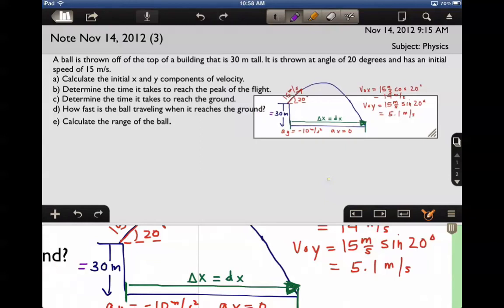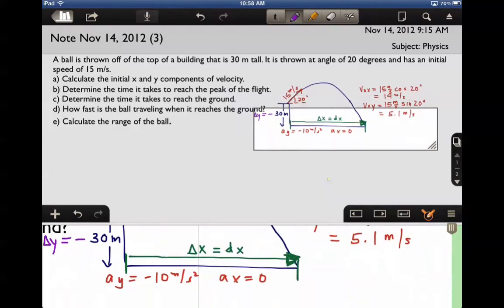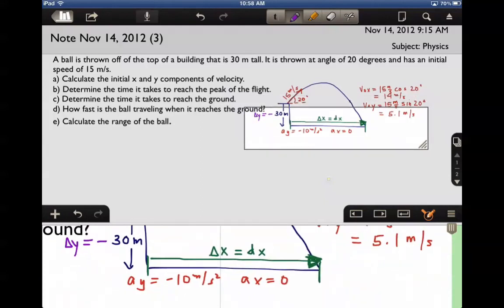But I'm actually going to write this a little differently. I want to be careful here because I need to include a negative sign, and that negative sign is consistent with the fact that acceleration is also negative in the y direction. Down is negative. So now that I know all this information, I can start to do the calculations.